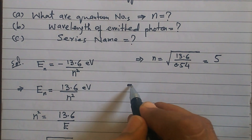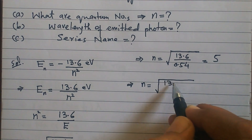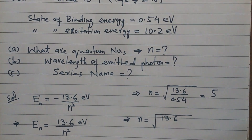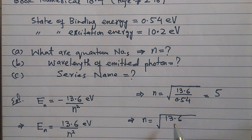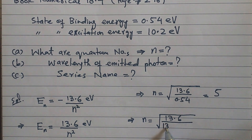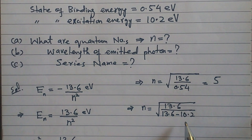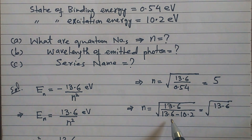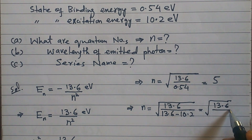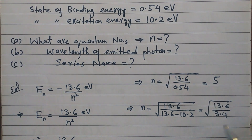Now we find n for the second value. This time, the given value is an excitation energy of 10.2 eV, so we use: n = √(13.6 / (13.6 − 10.2)) = √(13.6 / 3.4). Taking the square root gives us n = 2.